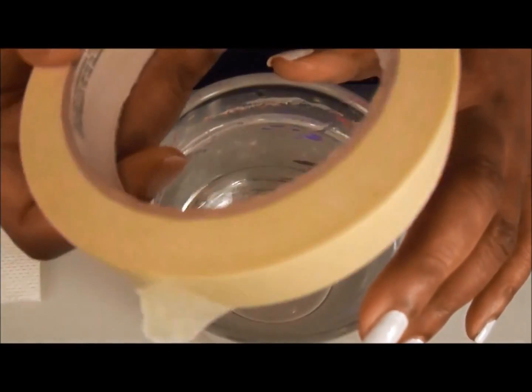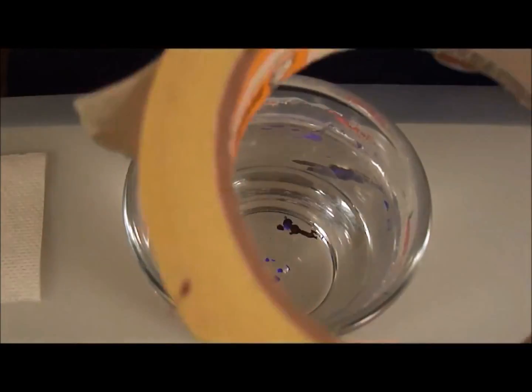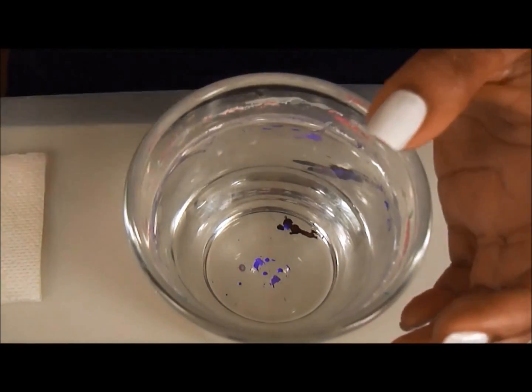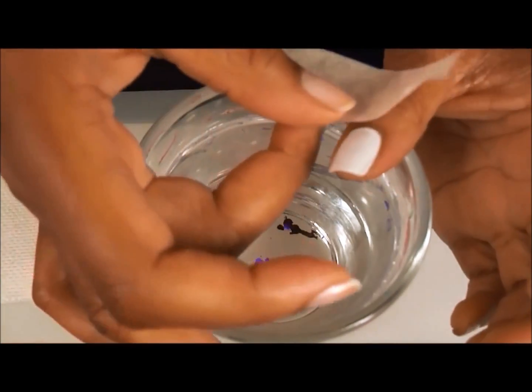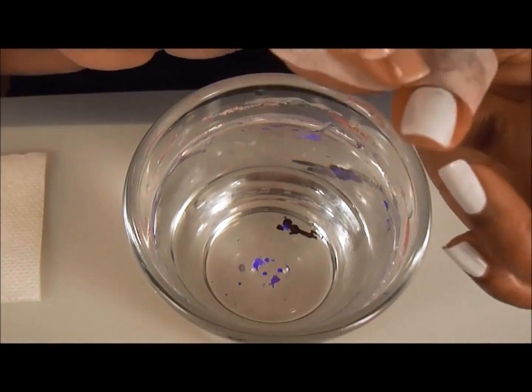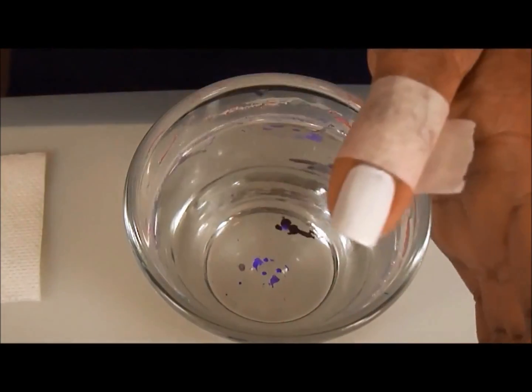To wrap my nails, I use masking tape. Plain old masking tape. I just need two little strips. I take one strip and I put it as close to the front of the bed of my nail and I wrap it around so it looks like that.